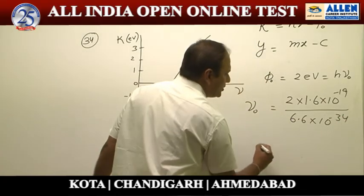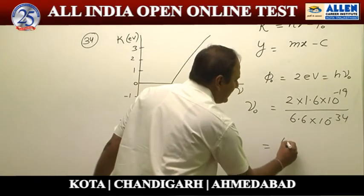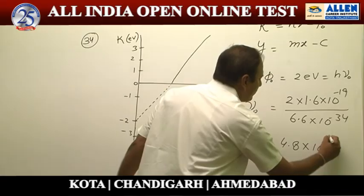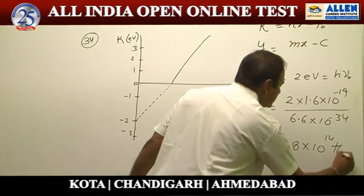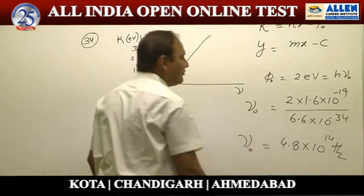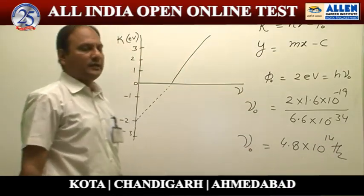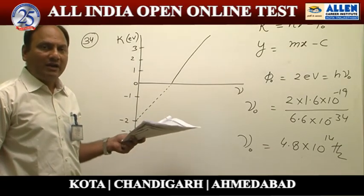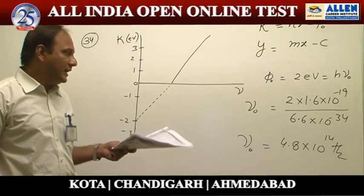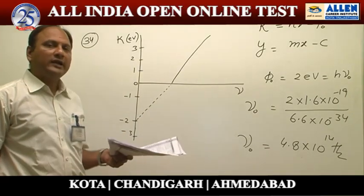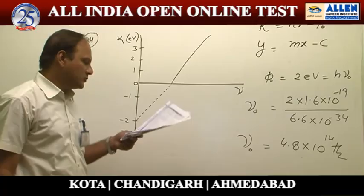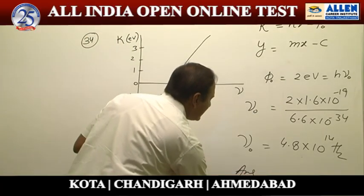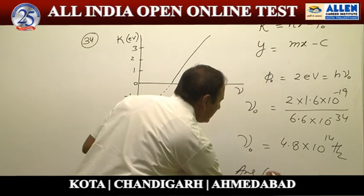On solving, we get the threshold frequency ν₀ = 4.8×10¹⁴ Hz. So the threshold frequency of this metal plate for which the graph is plotted is 4.8×10¹⁴ hertz. The answer is option number 3.